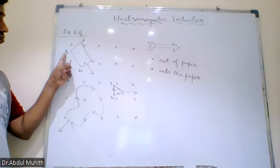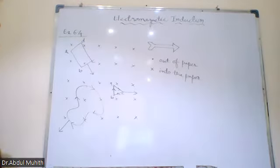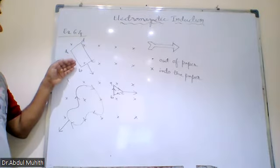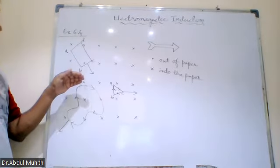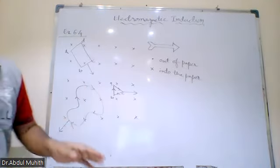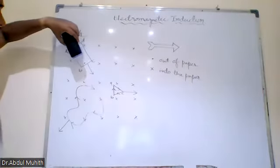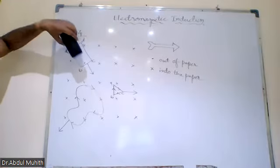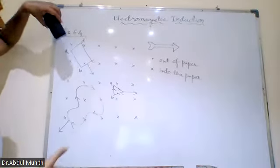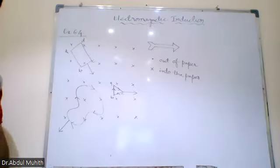Now you have ABC and this is the loop. This loop is placed in the magnetic field. Now this magnetic field is going into the paper. The magnetic field is moving into the paper and the coil is entering, moving like this. The conductor is moving perpendicular to the magnetic field.